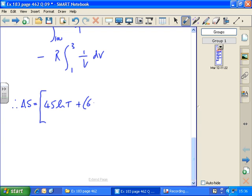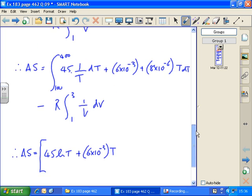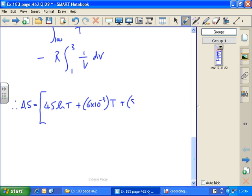That's 45 log T, plus 6 times 10 to the minus 3 T, because the T reappears when you integrate, plus 8 times 10 to the minus 6, add 1 to the power and divide by the new power, between 100 and 400.